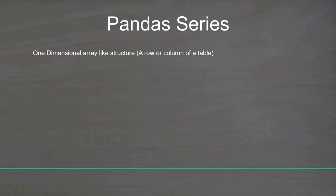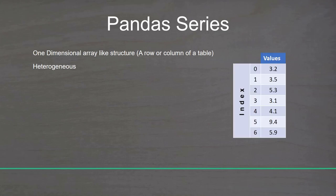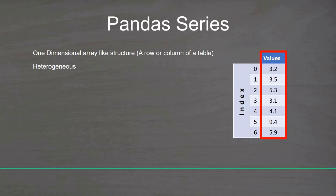Series is a one-dimensional labeled array capable of holding data of any type. It is heterogeneous, meaning it can hold different data types, but in practice it usually contains data with a specific type. If we compare it with primary data structures in Python, Series is a combination of lists and dictionaries but supports many other functionalities. A Series has two parts called index and values. Index is like keys in a dictionary, which is used to access values.